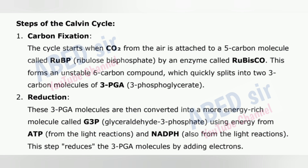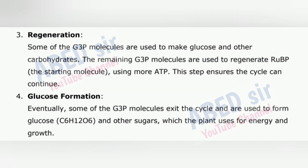2. Reduction – these 3-PGA molecules are then converted into a more energy-rich molecule called G3P (glyceraldehyde-3-phosphate), using energy from ATP and NADPH from the light reactions. This step reduces the 3-PGA molecules by adding electrons. 3. Regeneration – some of the G3P molecules are used to make glucose and other carbohydrates. The remaining G3P molecules are used to regenerate RuBP, the starting molecule, using more ATP. This step ensures the cycle can continue.